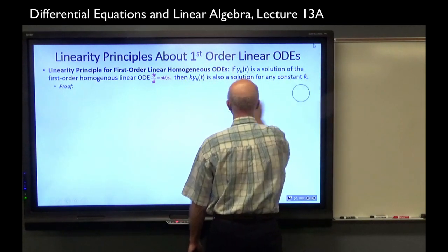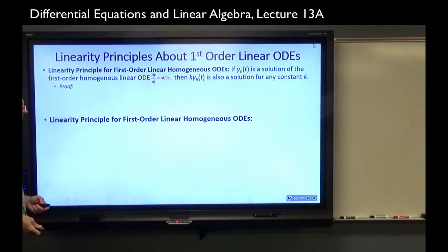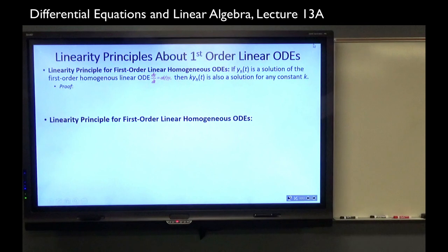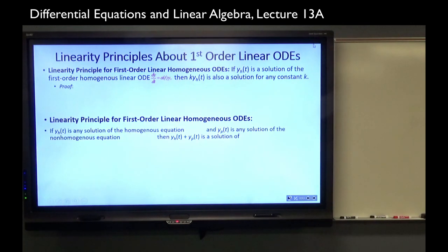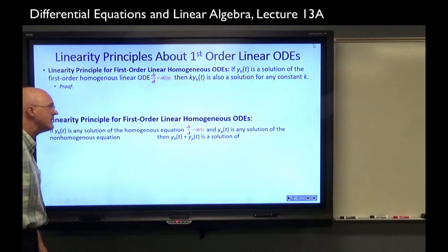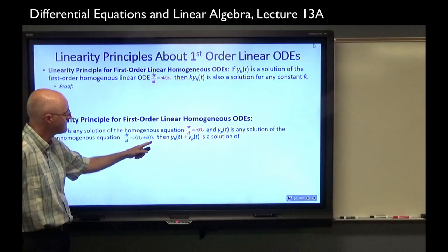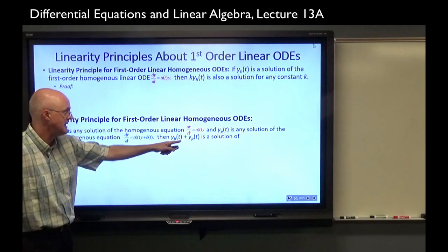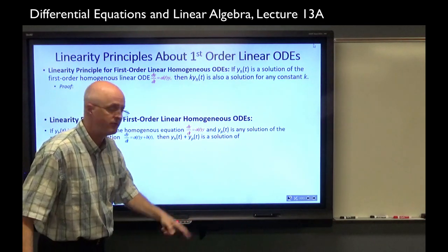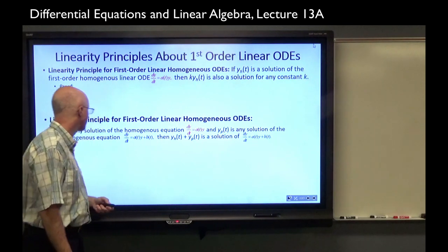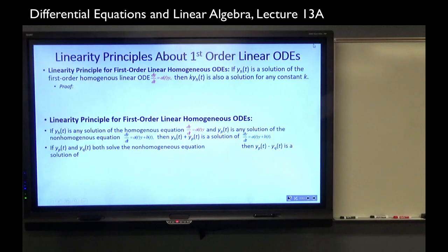Also in the Blanchard-Devaney-Hall book is an extended linearity principle. If y_H(t) is any solution of the homogeneous equation and y_P(t) — P for particular, H for homogeneous — is any solution of the non-homogeneous equation (with a +b(t) term), then y_H + y_P is a solution of the non-homogeneous equation as well. The second part: if y_P and y_Q both solve the non-homogeneous equation, then their difference is a solution of the homogeneous equation.